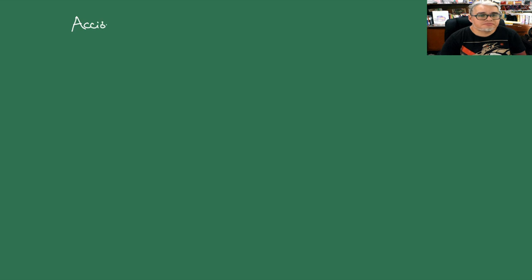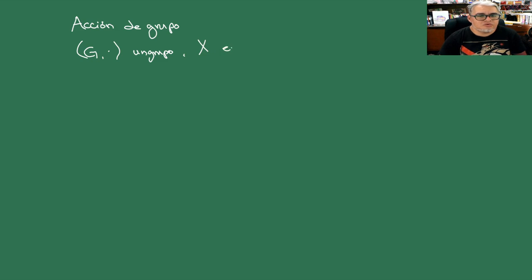¿Qué es una acción de grupo? Para hablar de acciones de grupo, vamos a referirnos a dos objetos. Uno es un grupo, digamos G con la operación puntito. Y X, que es un conjunto.